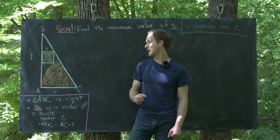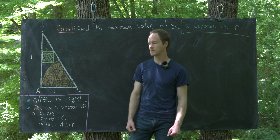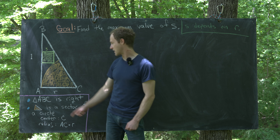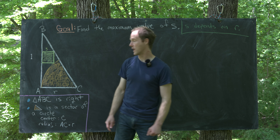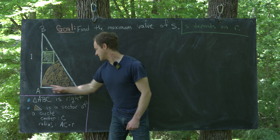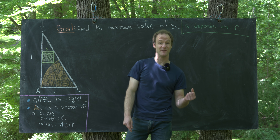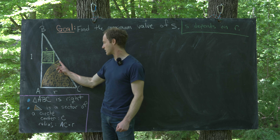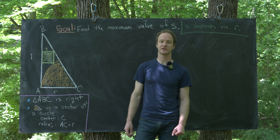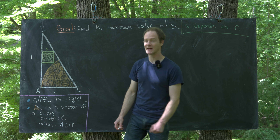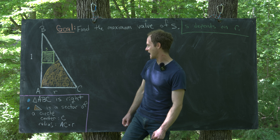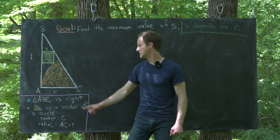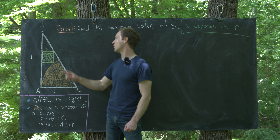We've got a nice geometry problem. The setup: we have a right triangle ABC where the height is one unit and the base is a variable r. Inside that right triangle we place a sector of a circle centered at C with radius r, given by line segment AC. That radius sweeps from point A to a point along the hypotenuse of the triangle.